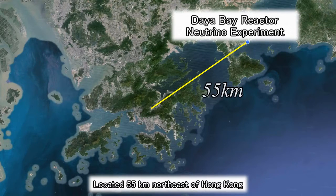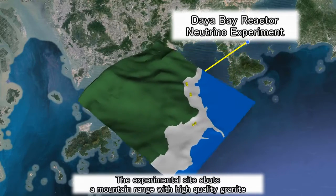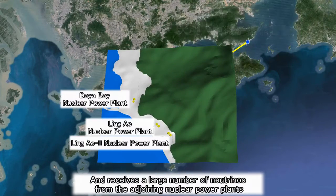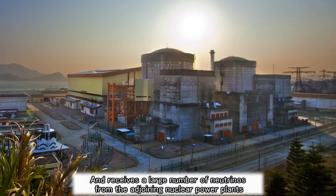Located 55 kilometers northeast of Hong Kong, the experimental site abuts a mountain range with high-quality granite and receives a large number of neutrinos from the adjoining nuclear power plants.